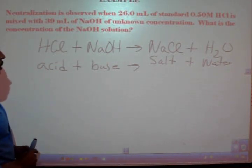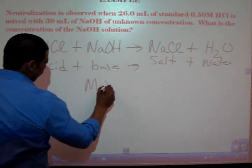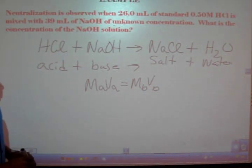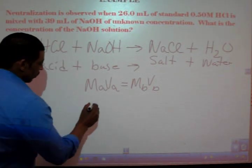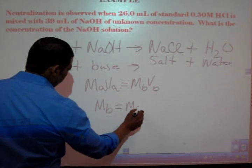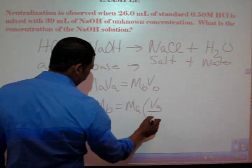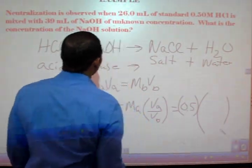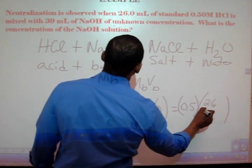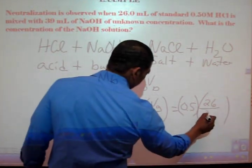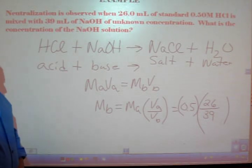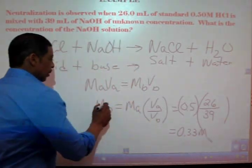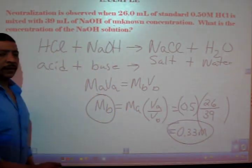Getting back to our practice problem. Now we simply write the titration formula. M-A-V-A is equal to M-B-V-B. The practice problem is asking for the concentration of the base. So M-B is equal to M-A times V-A over V-B. Or 0.5 times 26 over 39. Now this will give us a value of 0.33 molar for the molarity of the base.